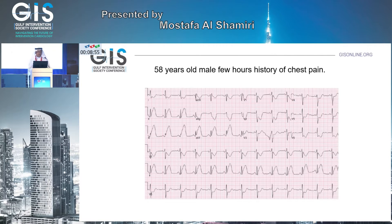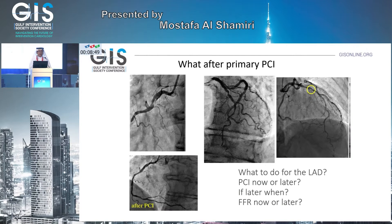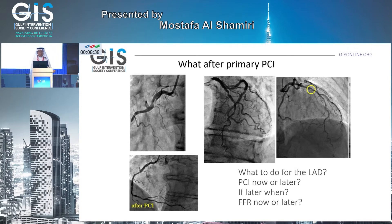So this is a 58-year-old who came with inferior STEMI with chest pain. The angiogram showed that he has a CTO — a totally occluded RCA. The RCA was fixed and stented, and then there was another lesion in the proximal LAD. The question is: who will fix the LAD now?